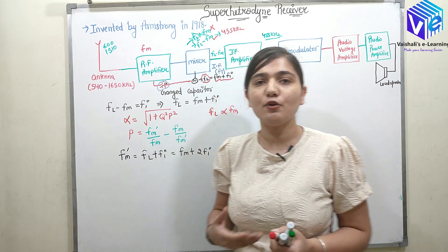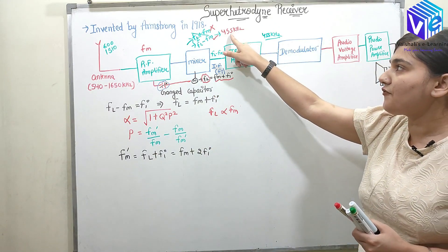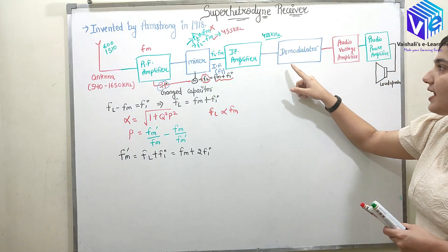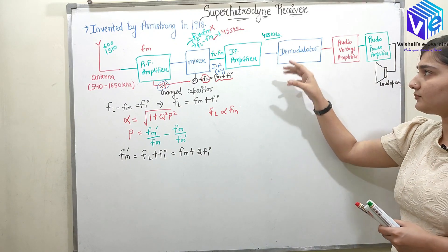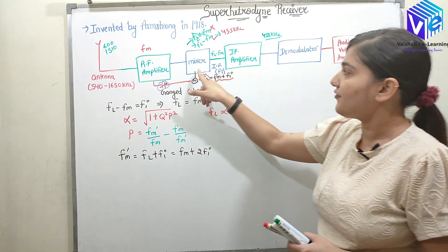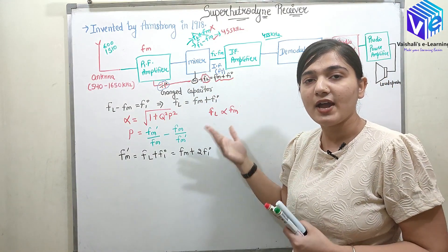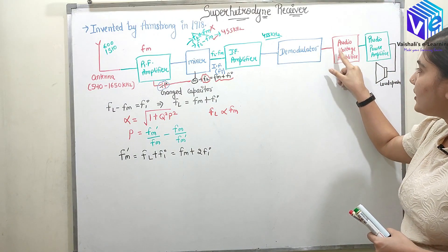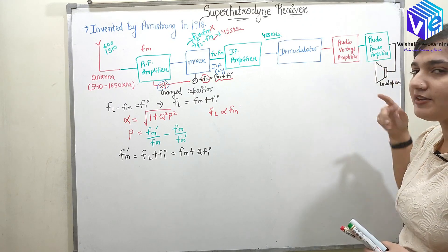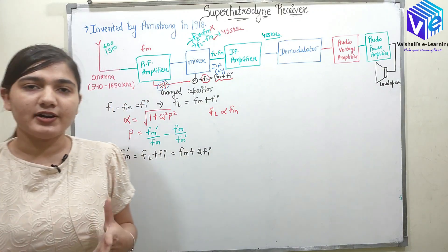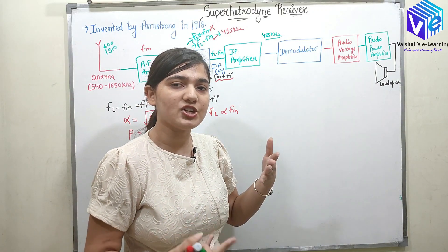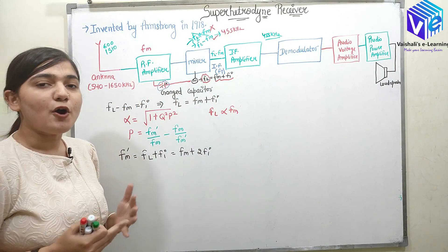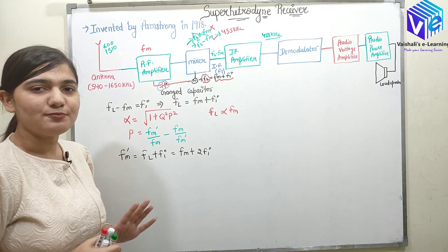The IF amplifier will amplify only those frequencies in the range of 455 kilohertz; it will keep all other frequencies attenuated. After that, the signal goes to the demodulator — the second demodulator. The first was the mixer, because the mixer was also acting like a synchronous demodulator. Here we extract the signal, amplify the voltage, then amplify the current, and the loudspeaker converts the current into vibrations in the air, converting the electrical signal into physical form.